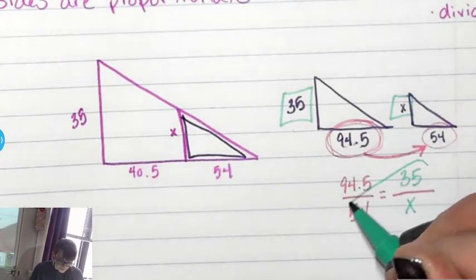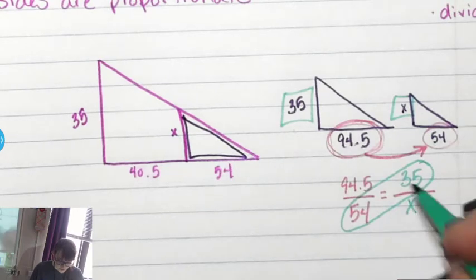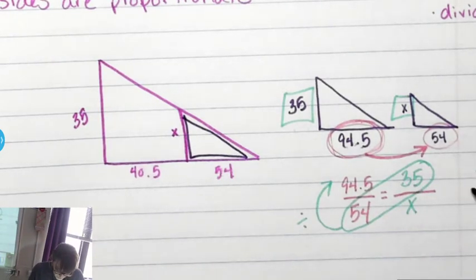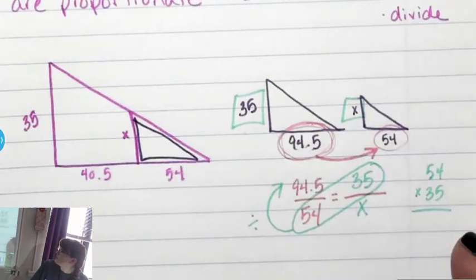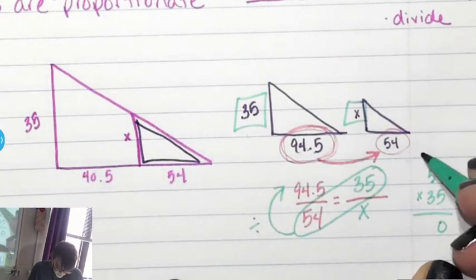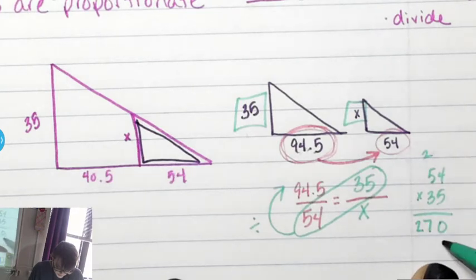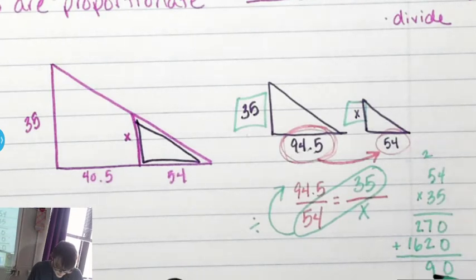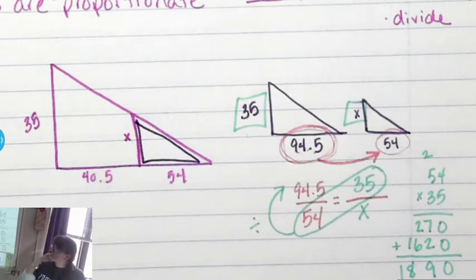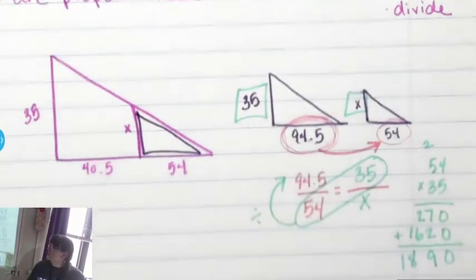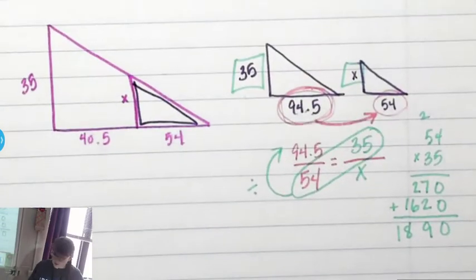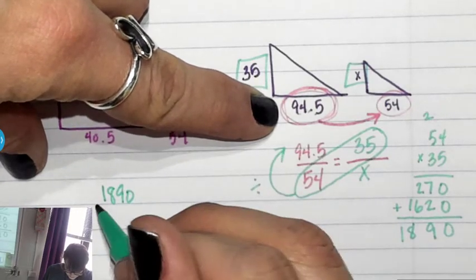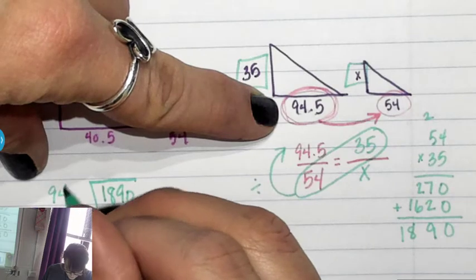So, I do 35 times 54. And then divide by 94.5. So, 54 times 35. That's 20, 25, 26, 27, 0, 12, 16, and 0, 7, 8, 9, 6, 8, 1. 1, 8, 9, 0. And then we divide by 94.5.